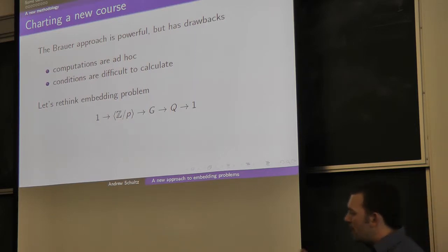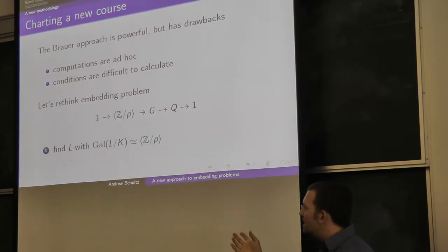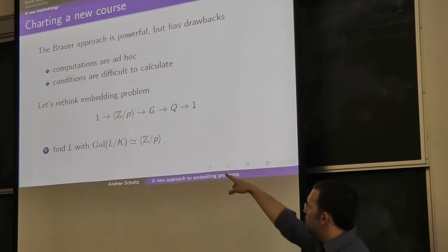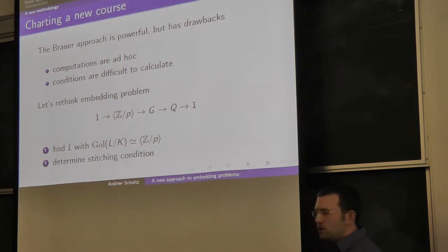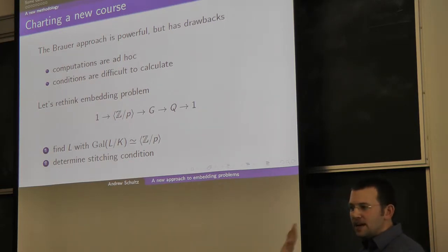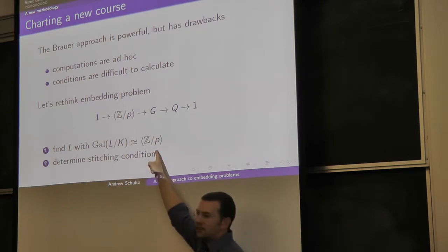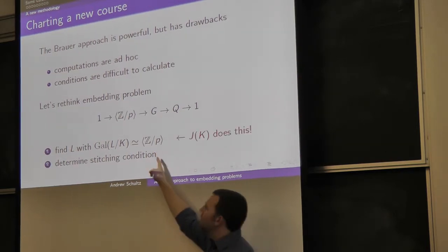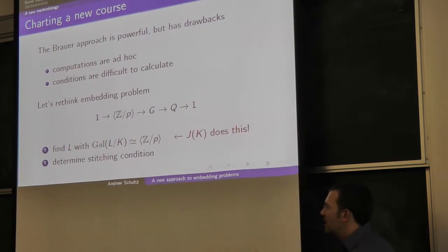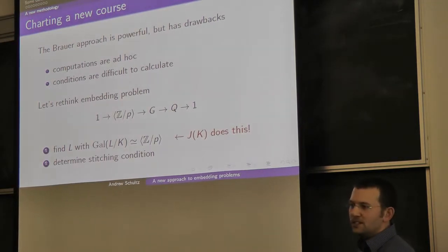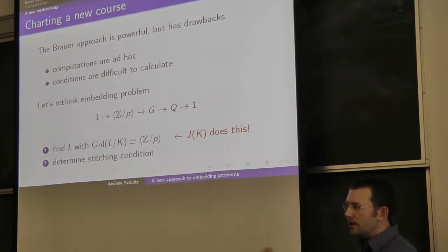There's a two-phase attack on embedding problems. First, you try to find an extension whose group is isomorphic to the kernel of the map, and then you worry about some stitching condition. We classified exactly Galois groups that look like this — those were given by the object J of K — so finding an answer to part one is really simple. We need to focus on finding the stitching condition.